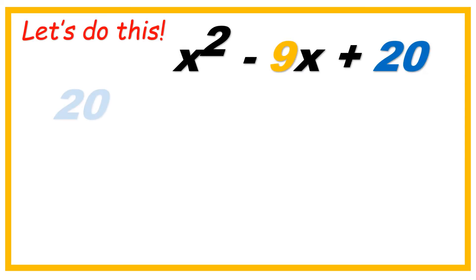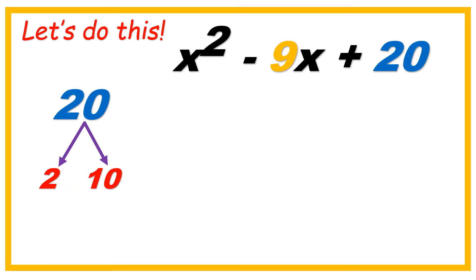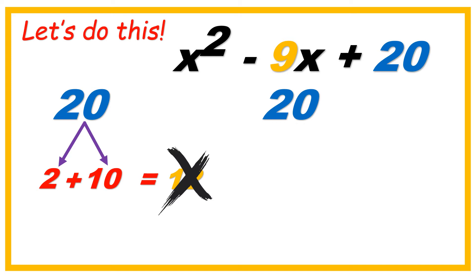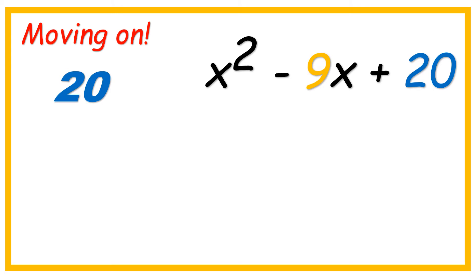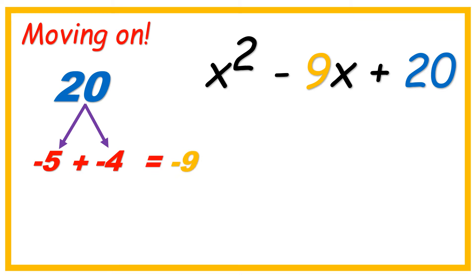Let's do this. Factors of 20: let's try 2 times 10 — yes, that is 20, but if we add them together, 2 plus 10, the answer is 12 — that's wrong. Another factor: 4 times 5 is 20, but if we add them, the answer is 9 — positive 9, that's not it. The factors of 20: negative 5 times negative 4 — that's positive 20. If you add two negative numbers, the answer is negative. Negative 5 plus negative 4 is negative 9. Correct!